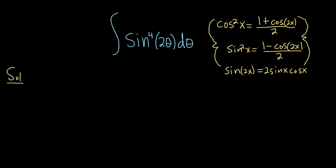We'll start by using the identity for sine squared because we have sine to the fourth. One way to do it is in steps. You can write it as the integral of sine squared of 2 theta times sine squared of 2 theta d theta, because sine squared times sine squared is sine to the fourth. Now we apply the identity for sine squared.